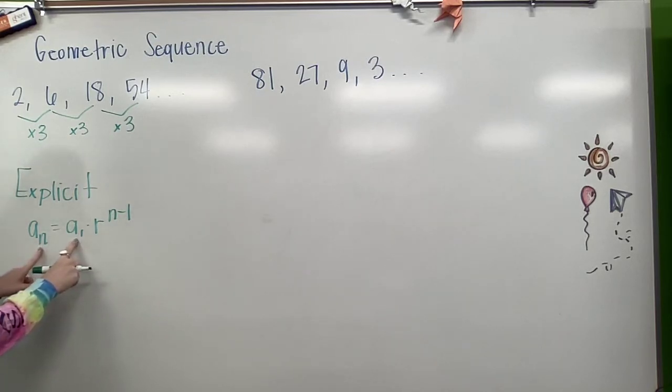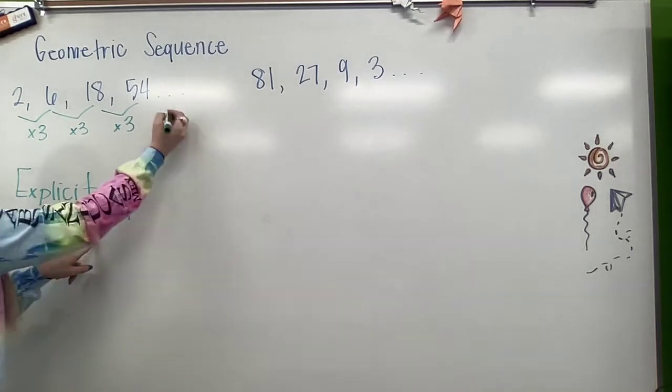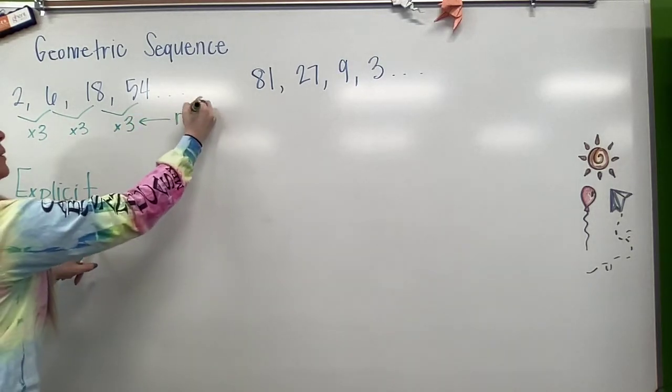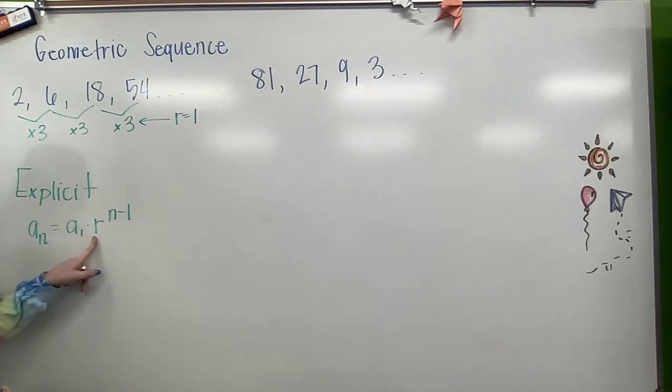We already know first term and last term from arithmetic, but now we're introducing this r. This value that we multiply by each step is my r. So if I were to write the explicit formula for this geometric sequence,